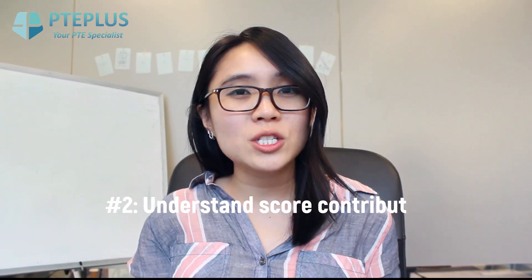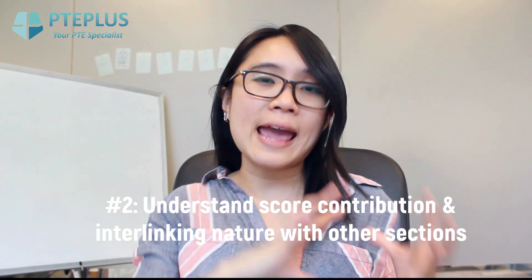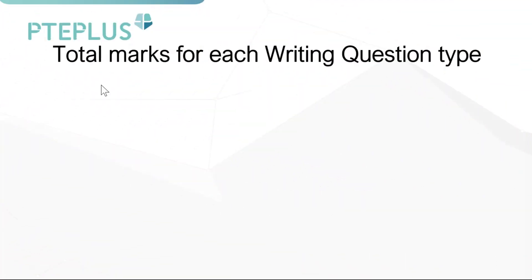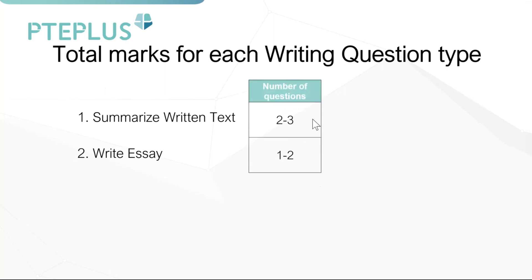The second key understanding about PTE writing is knowing what actually makes up your score and how it interlinks with other sections of the exam. Looking at the writing question types, there are two types, and the number of questions you face depends on what the machine randomly generates. More commonly students will get two Summarize Written Text and two Write Essay questions, but you could also get three Summarize Written Text and one Write Essay.